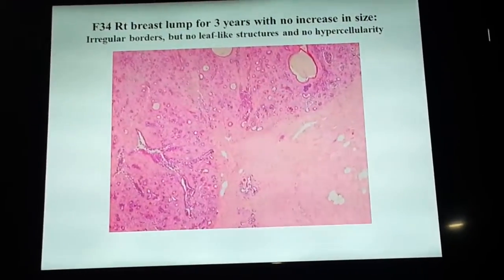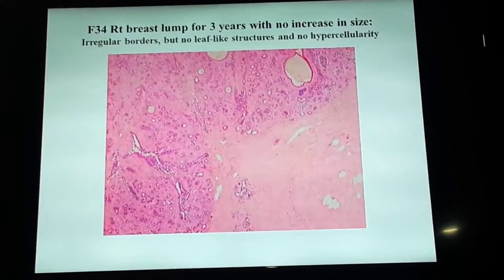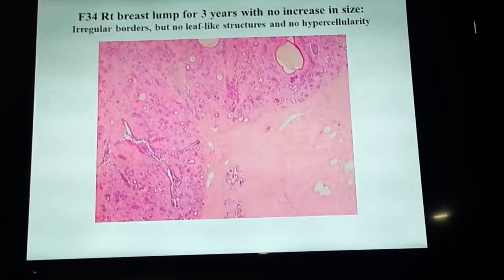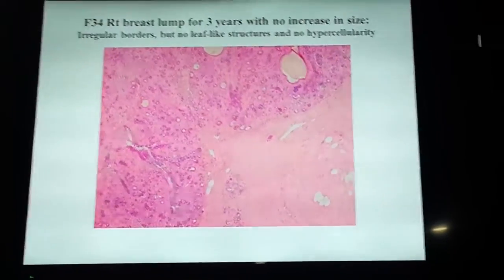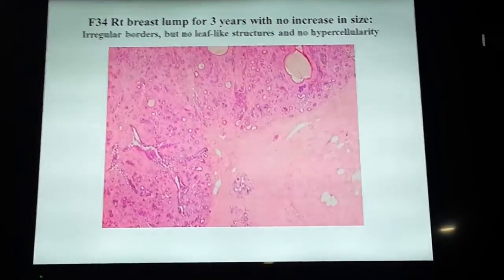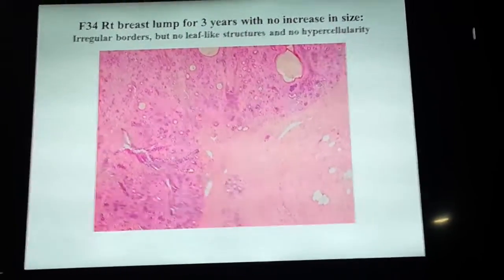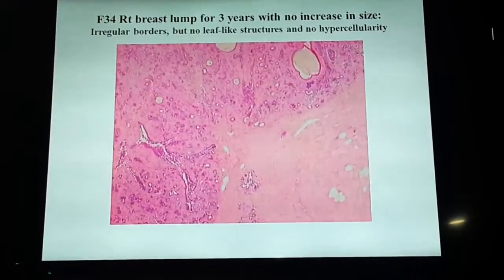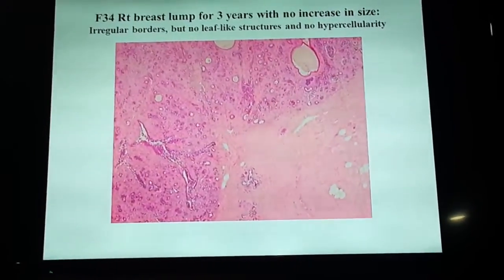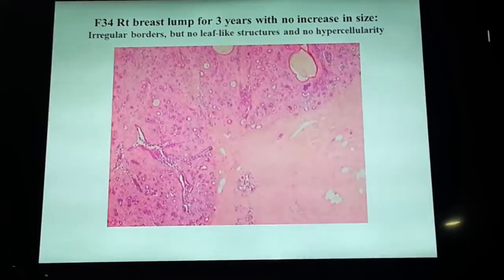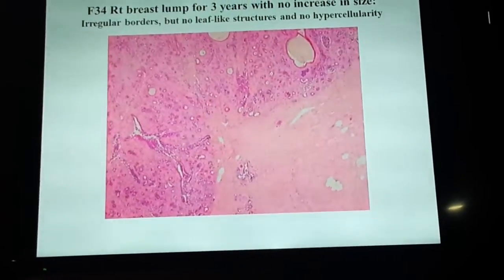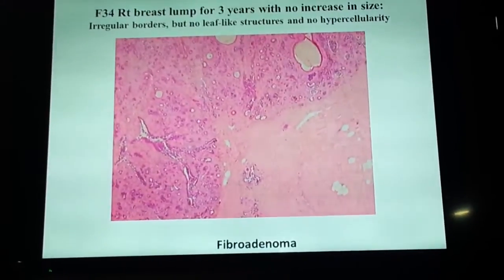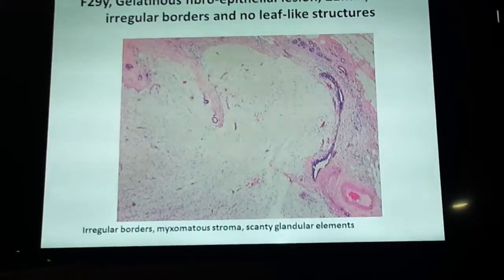Now this lesion here — the border is a bit irregular, but the similarity is low and there is no leaf-like structure. So therefore, although the border is a bit irregular and the region was a bit worrying, because usually a fibromyalinoma would be a concern. The border was a bit irregular in some areas, but the similarity is low, there is no mitotic figure, and there are no leaf-like structures. So this is, in spite of the irregular border, a fibromyalinoma.